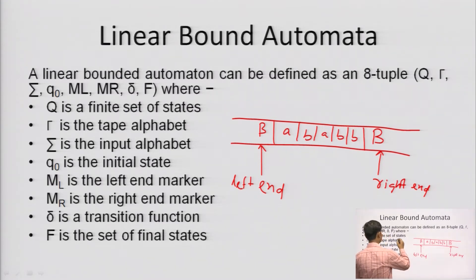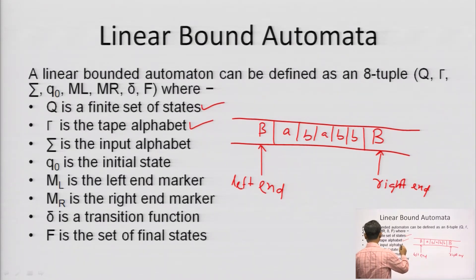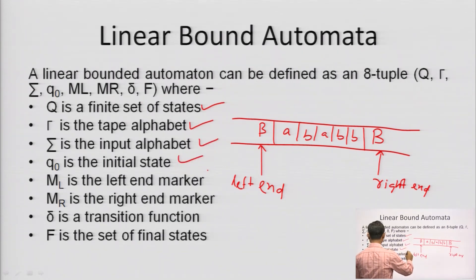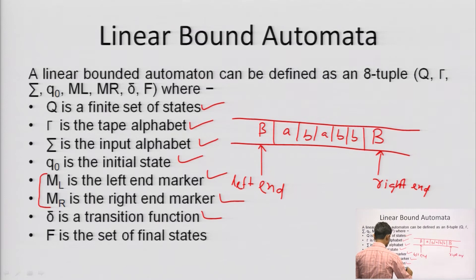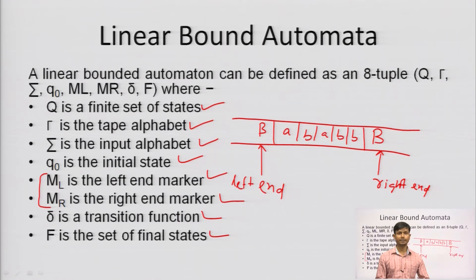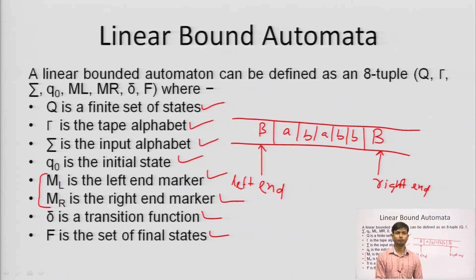The formal definition: Q is the finite set of states, tau is the tape alphabet, sigma is the input alphabet, q0 is the initial state, ML is the left end marker, MR is the right end marker — these two are new compared to a standard Turing machine — delta is the transition function, and F is the final state. The tape is fixed and computation must stay within those bounds.